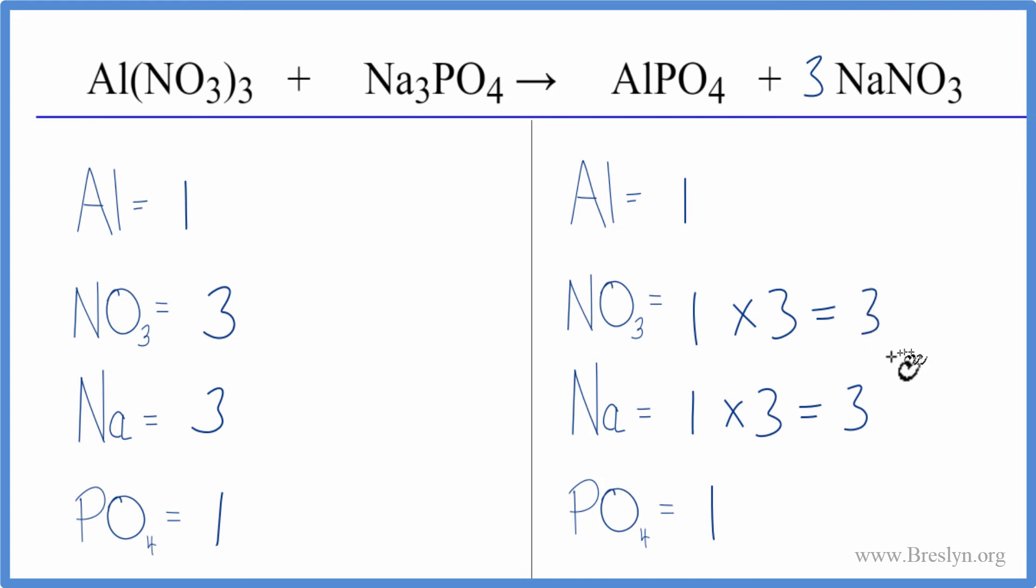This equation is balanced. So you can see how that helps. When we consider the nitrate as just one thing, if it stays together, we have it on both sides. The phosphate, it stayed together. We have it on both sides. We can count it as just one thing, and that makes the balancing a lot easier.